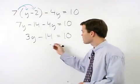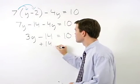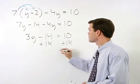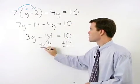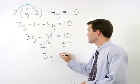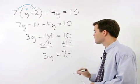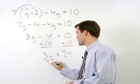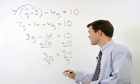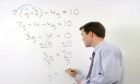By adding 14 to both sides which gives us 3y equals 24, and dividing both sides by 3 which gives us y equals 8.